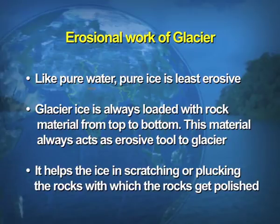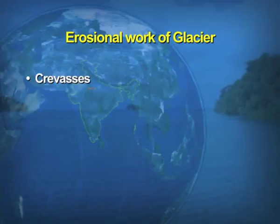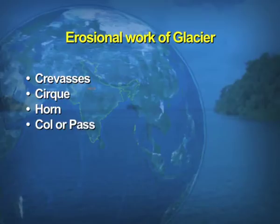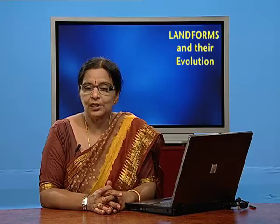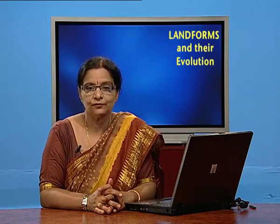This material helps the ice in scratching or plucking rocks, which then get polished. We will be talking about the various landforms formed by glaciers, for example: crevasses, cirque, horn, col, comb ridge, fjord, U-shaped valley, and sheep rocks, which are also known as Rocher mountain. One by one, we will discuss how these erosional features are formed.